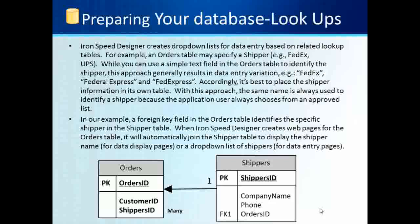Accordingly, it's best to place the shipper information in its own table. With this approach, the simple name is always used to identify a shipper because the application user always chooses from an approved list. In our example, a foreign key field in the orders table identifies the specific shipper in the shipper table. When IronSpeed Designer creates web pages for the order table, it will automatically join the shipper table to display the shipper name for data displayed pages, or a drop-down list of shippers for data entry pages.